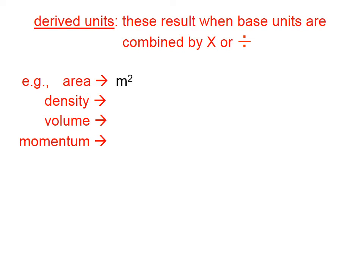Density is mass divided by volume, so a derived unit for density might be kilograms per cubic meter. For volume, of course, cubic meters. The derived unit for momentum, which we'll meet later on if you continue following these lessons, is the kilogram meter per second.